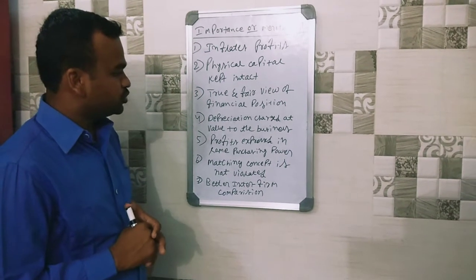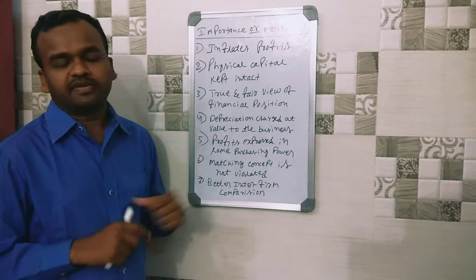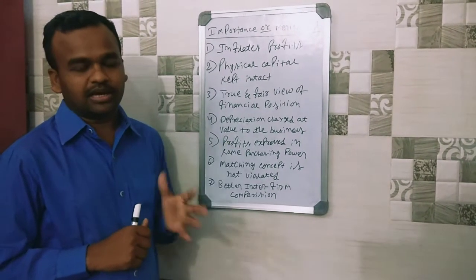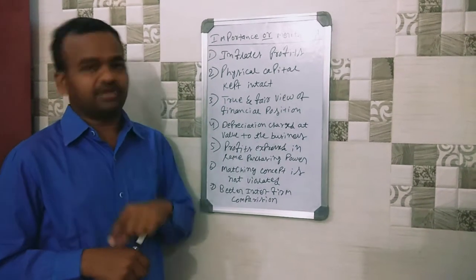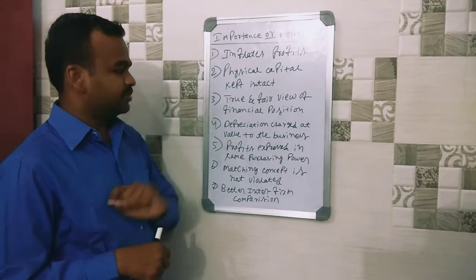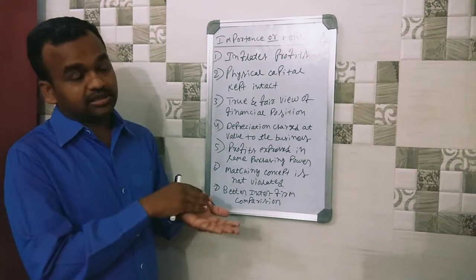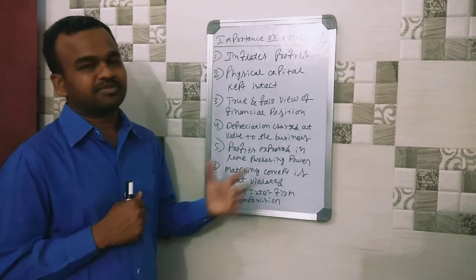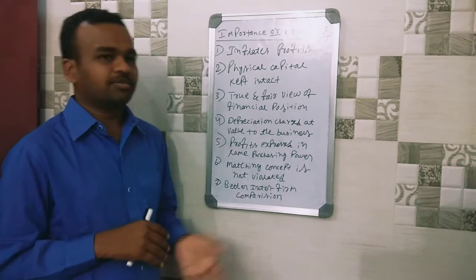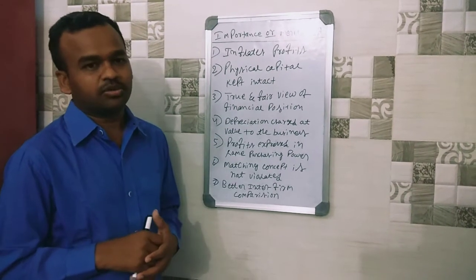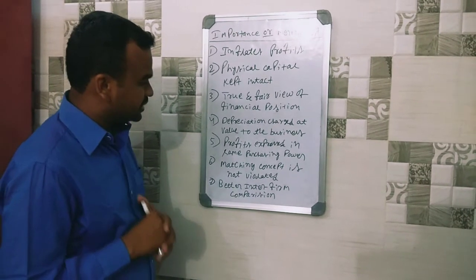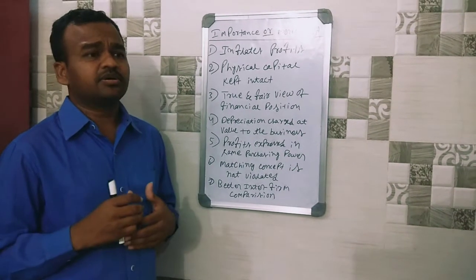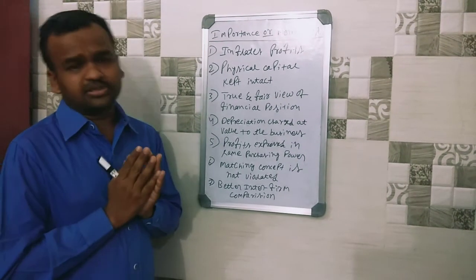Next point: depreciation charge — value to the business. In inflation accounting, stock and assets are recorded not at original cost but at current market value, which better indicates the value to the business compared to historical cost accounting.